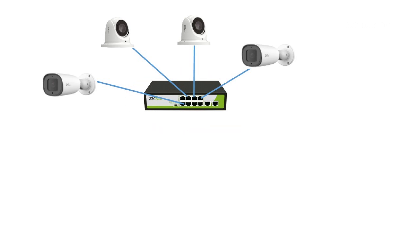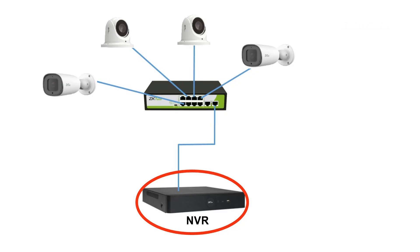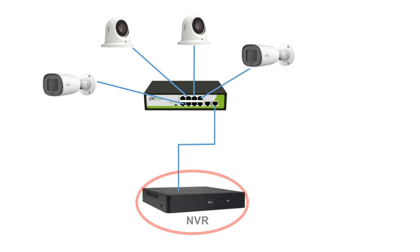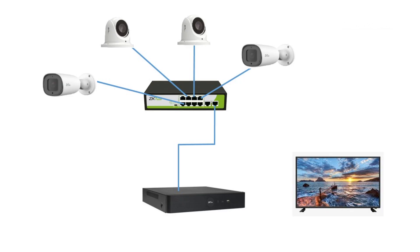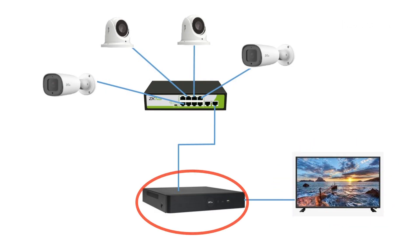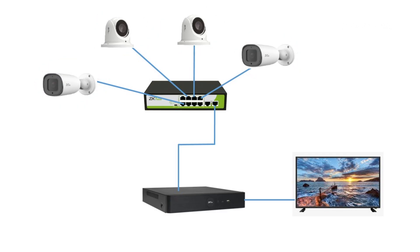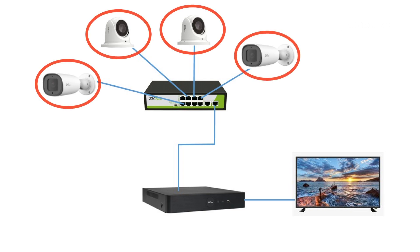We'll then need to bring in the network video recorder at this point, and we'll connect from the switch into the network video recorder using a network cable. Be reminded that it is the network video recorder, or the NVR, that houses the hard disk drive or the surveillance drive onto which the videos of the cameras on the network are stored. So there's the need to fix a hard drive or a surveillance drive into the network video recorder. We will now provide the NVR with a display monitor, whereby we'll connect the NVR to the monitor so that through the monitor, we'll be able to see the interface of the NVR where we can search and find the cameras that have been connected to the network.